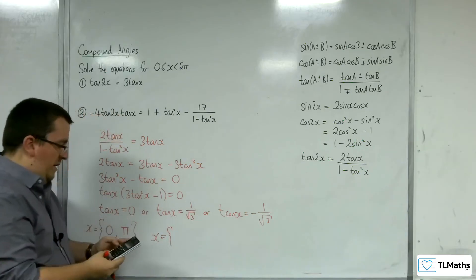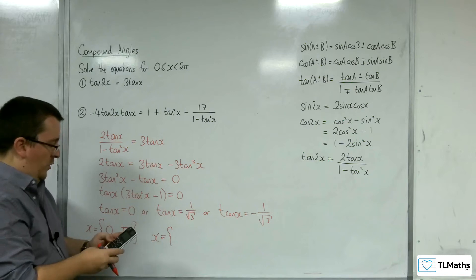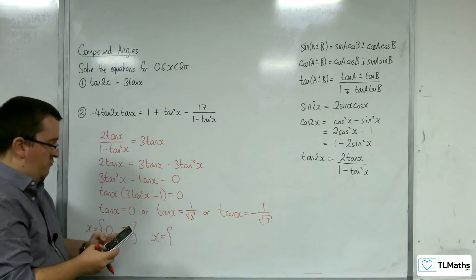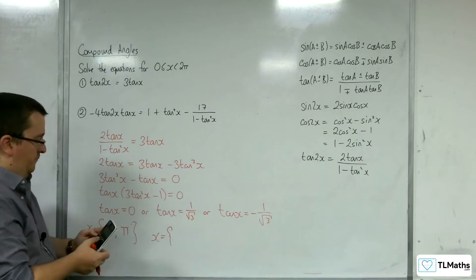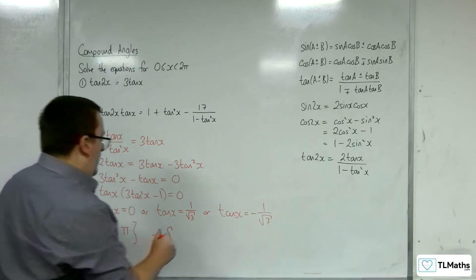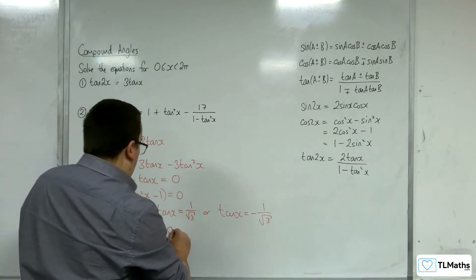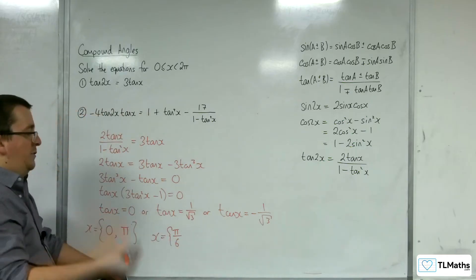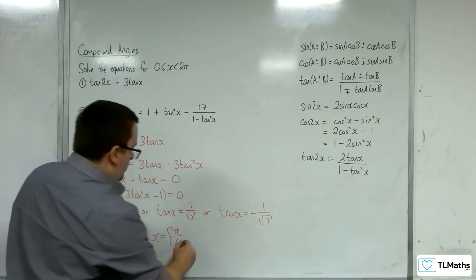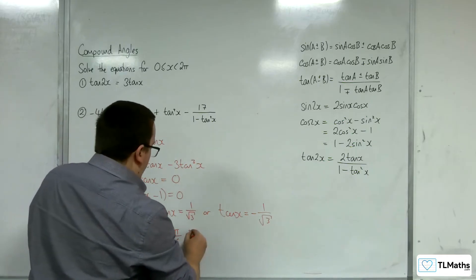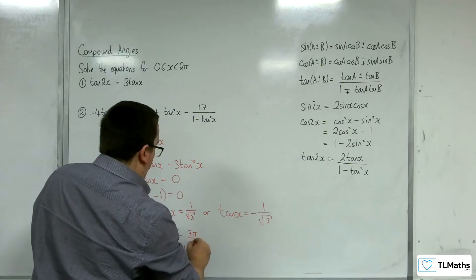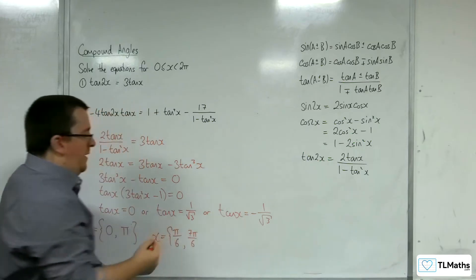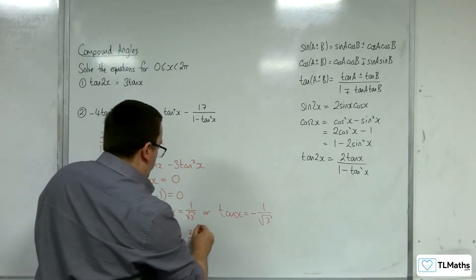Now the inverse tan of 1 over the square root of 3 gives us pi over 6. Add pi to that and we're going to get 7 pi over 6. Add pi to that and we're outside the range.